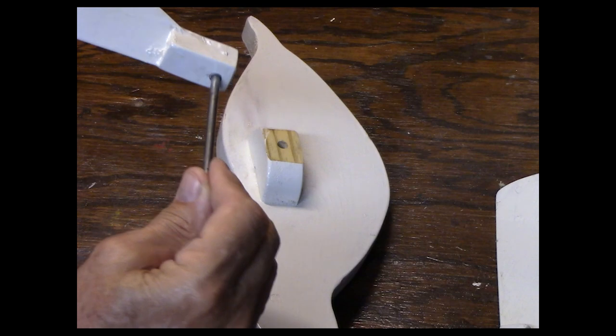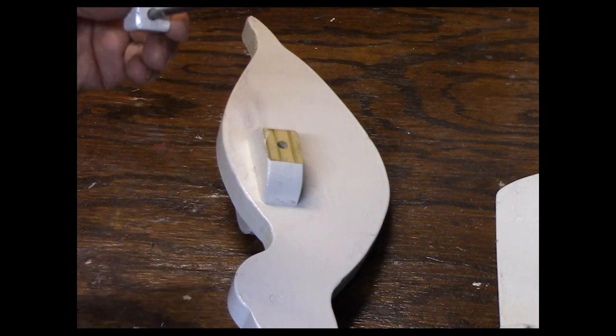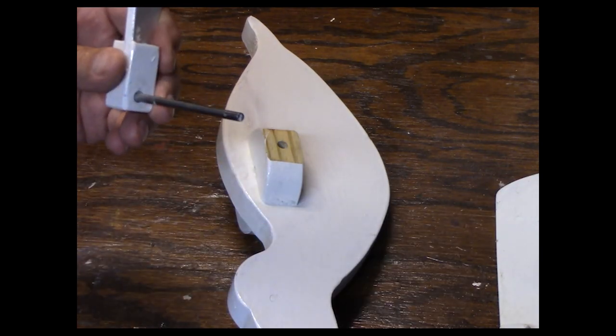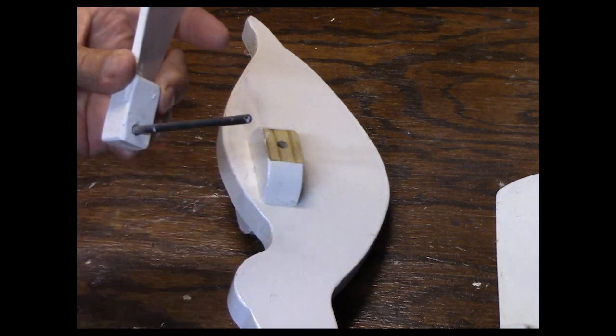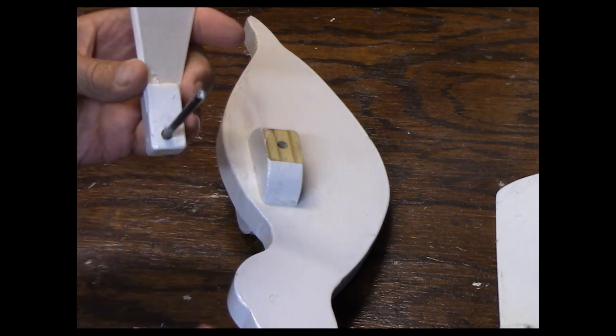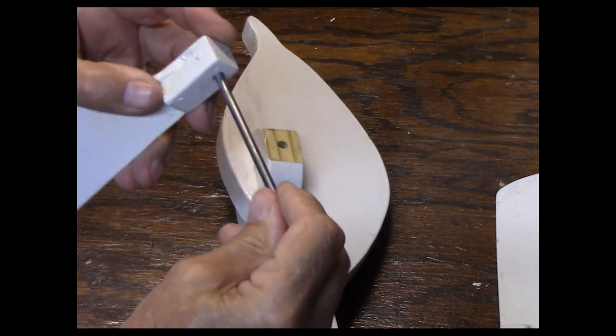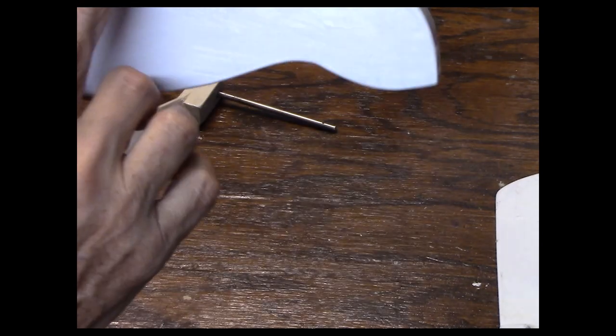There's the axle. This axle is a 3/16th rod. You can use wood or just coat hanger wire. But how easily do you want your wings to turn? How long do you want it to last? How durable do you want it to be? And how much time do you want to spend working on it?